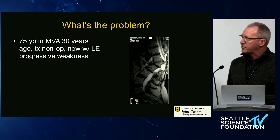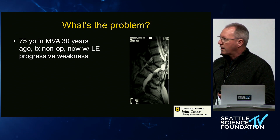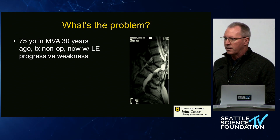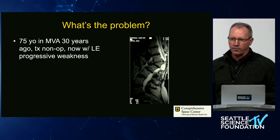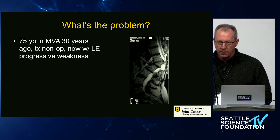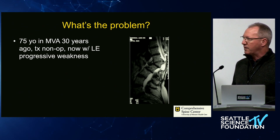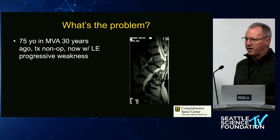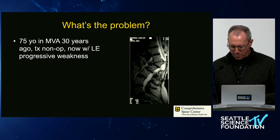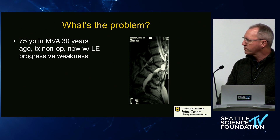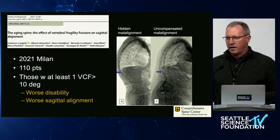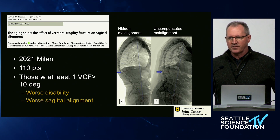Here's a patient I saw some years ago when she was 75 years old. She had a motor vehicle accident 30 years ago and was treated non-operatively for that injury. Although I don't have her initial injury films, she presents now with progressive bilateral lower extremity weakness. I see this and think: this might have been a lot easier to treat when it was first a fracture and mobile.